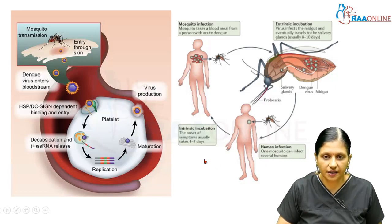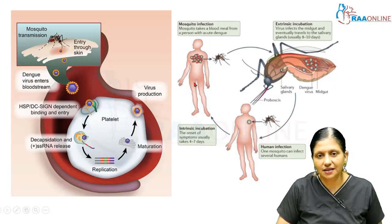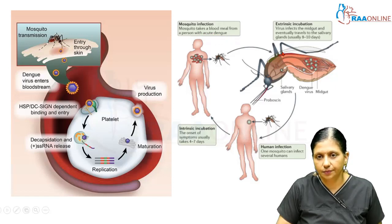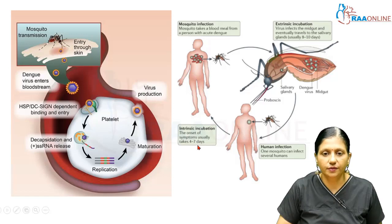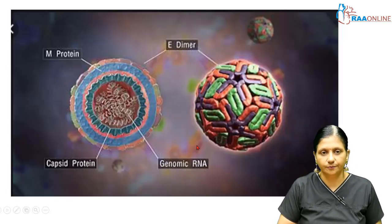In humans, the intrinsic incubation period is 4 to 7 days. After this period, the mosquito takes a blood meal from a person with acute Dengue and the cycle repeats. So the mosquito has an extrinsic incubation period of 8 to 10 days and the human intrinsic incubation period is 4 to 7 days.